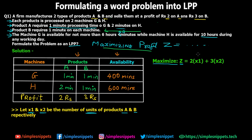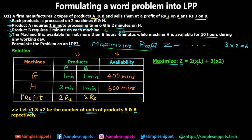In one single day, if the firm makes x1 units of product A and earns a profit of rupees 2 per unit, the total profit from A is 2 × x1. For example, if the firm makes 3 units of product A at rupees 2 profit, the total profit is 3 × 2 = 6. Similarly, if the firm makes x2 units of product B at a profit of rupees 3, the contribution is 3 × x2. So the final profit equation is Z = 2x1 + 3x2.